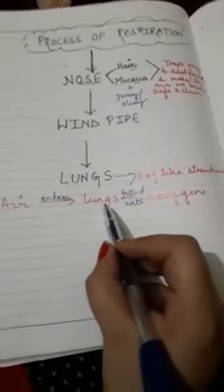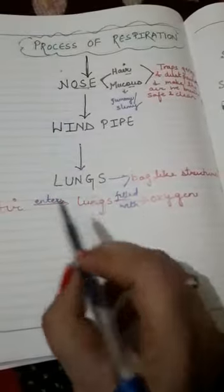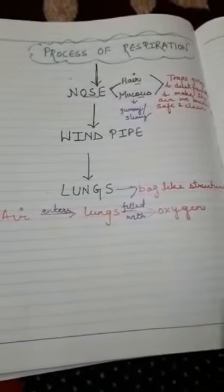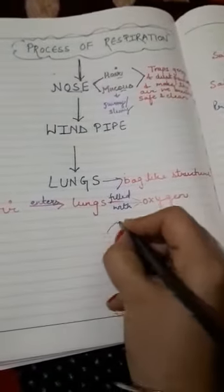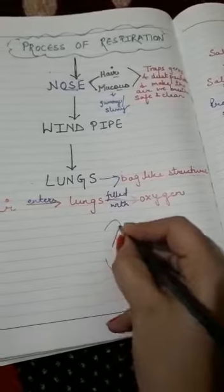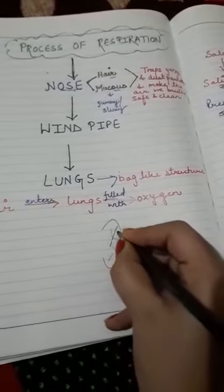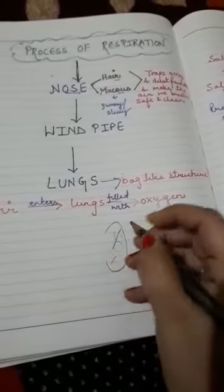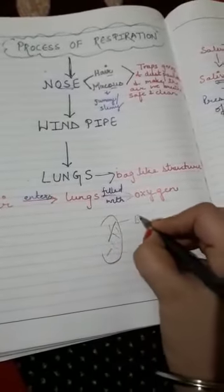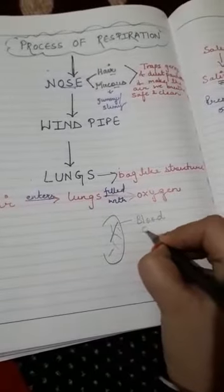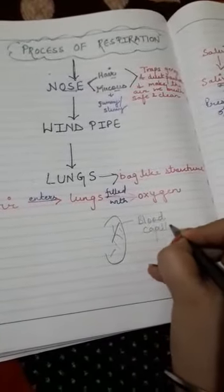Our lungs, as you have already seen in the diagram, consist of blood capillaries. Now what happens — these blood capillaries, they absorb the oxygen.